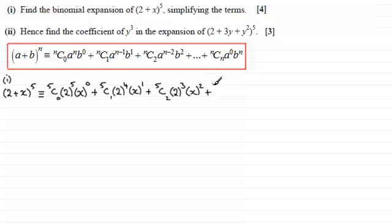Next term, 5c3, 2 squared, and then we've got x all cubed. Getting to there now, we've got 5c4 is the next term, 2 to the power 1, and then x to the power 4. Last term now, plus 5c5, 2 to the power 0, and then x to the power 5.